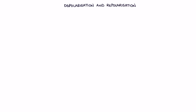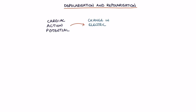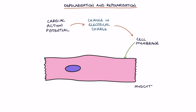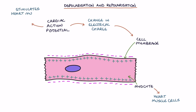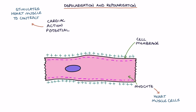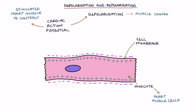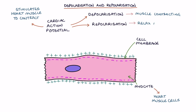Let's talk about depolarization and repolarization. The cardiac action potential refers to the change in electrical charge across the cell membrane of the myocytes, or heart muscle cells, that stimulates the heart muscle to contract. There are two essential parts: depolarization, which leads to the muscle contracting, and repolarization, which is where the cells relax and reset ready for the next contraction. Repolarization is like the recovery period.